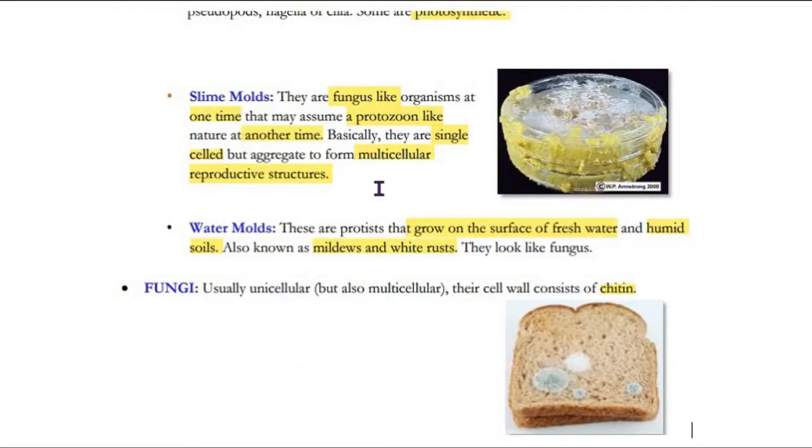The slime mold is the most interesting because sometimes it looks like fungus and sometimes like protozoans. Some of these are single-celled and multicellular. Now you can see how confusing protista is. This is the reason why these organisms don't fit in any other kingdom.